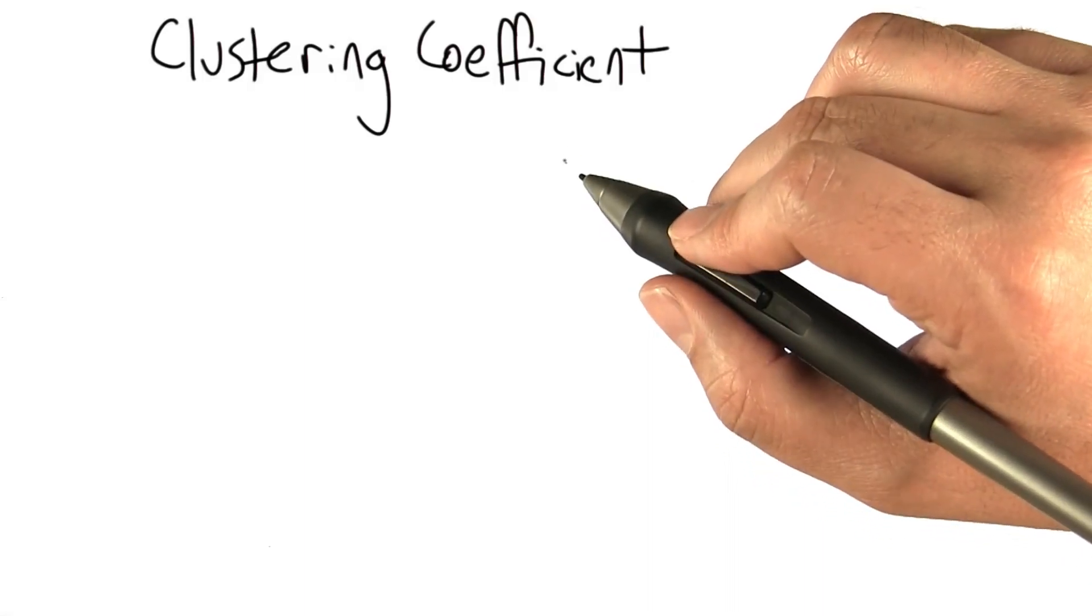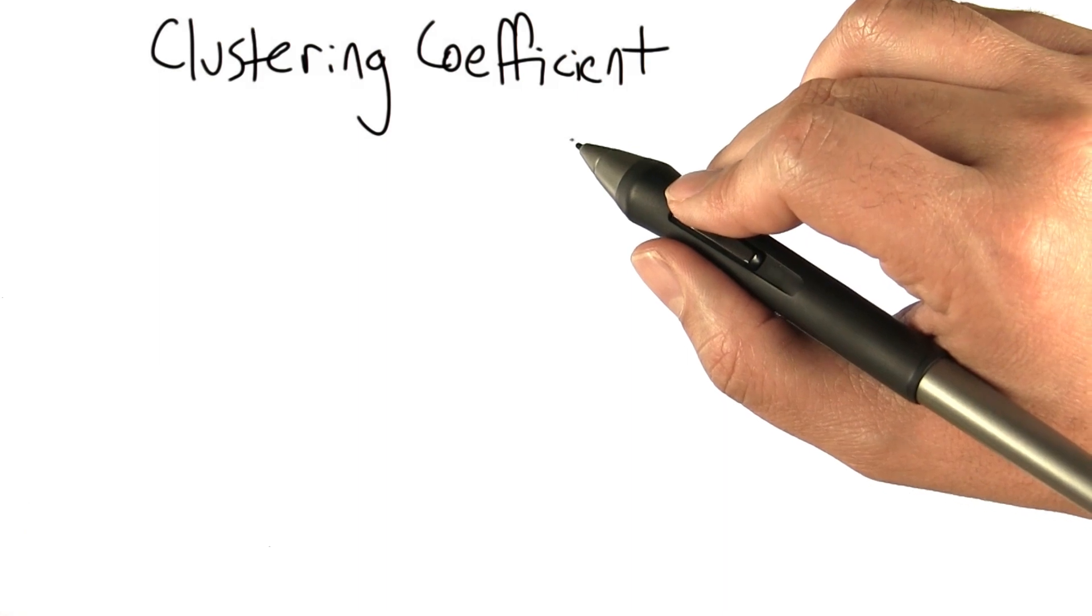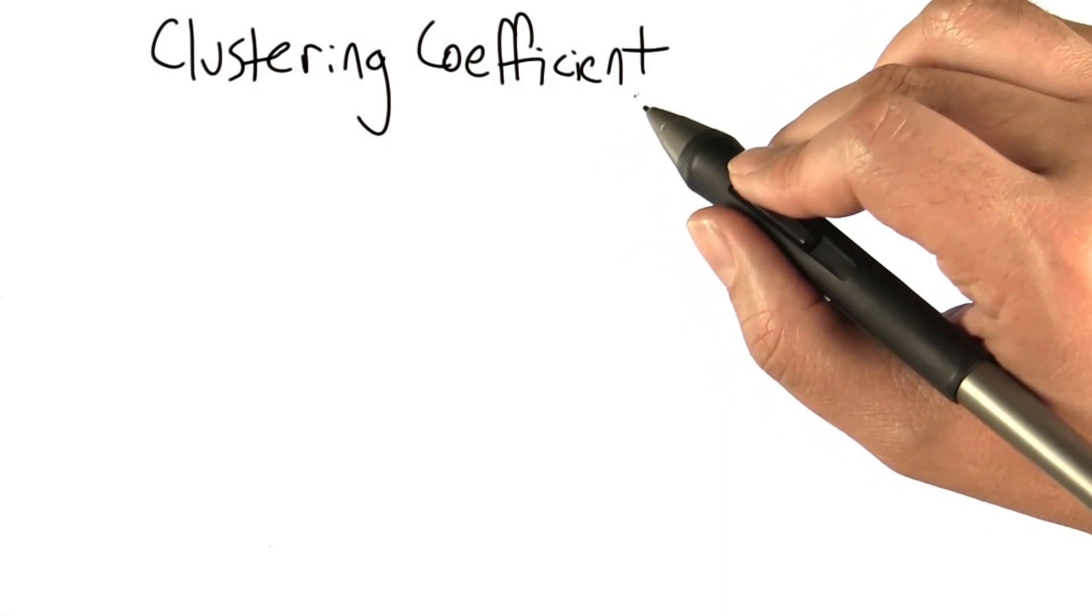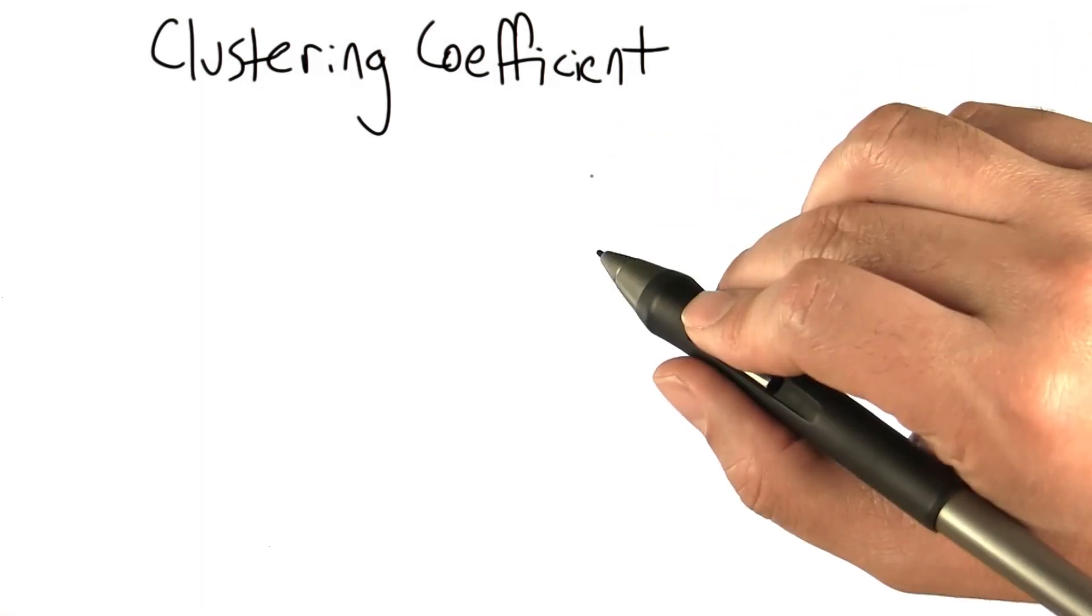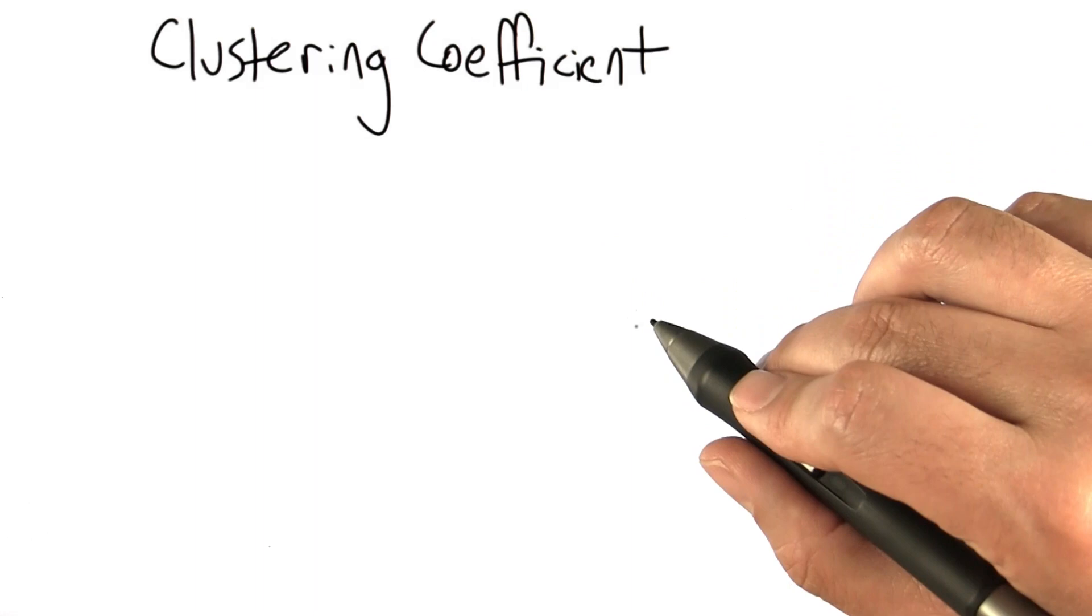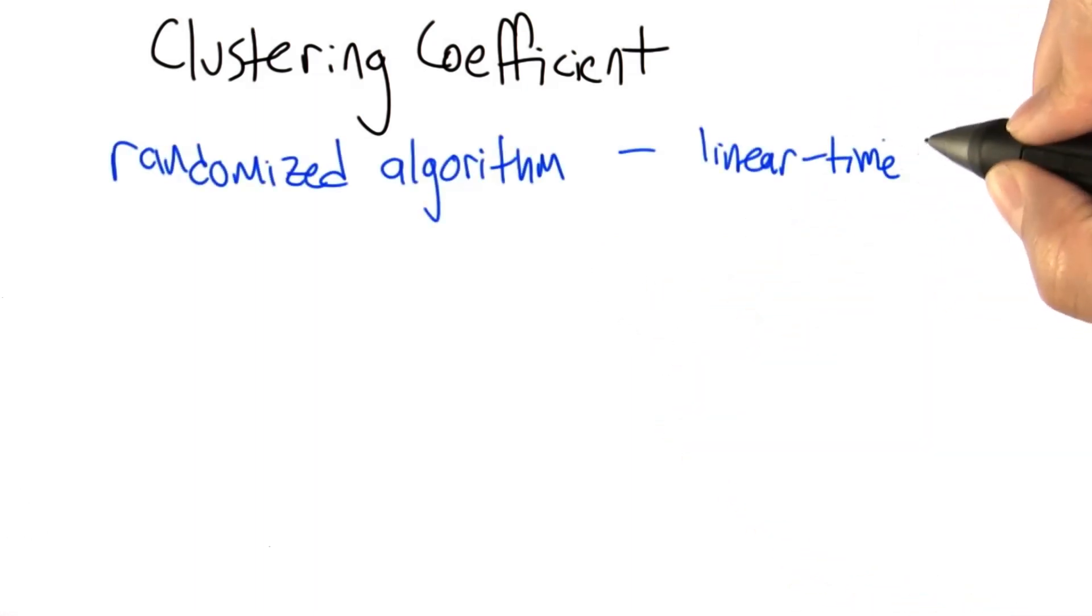That's all I'd like to say about shortest paths in weighted graphs in this unit. There are interesting questions on the homework for you to work with this concept and apply it to some interesting social networks. I'm going to take this last topic for this unit to be estimating the clustering coefficient. This is a different idea, but I wanted to introduce the concept of a randomized algorithm.